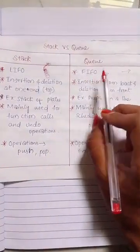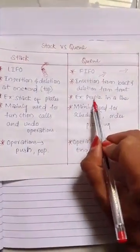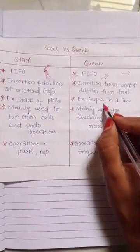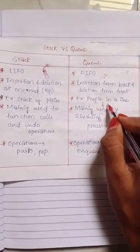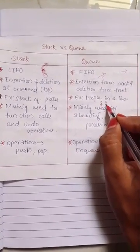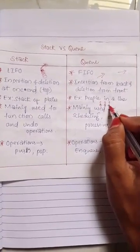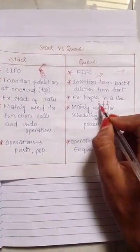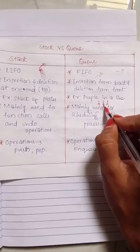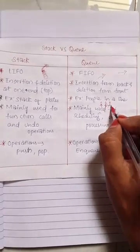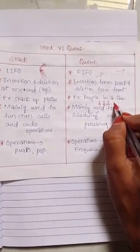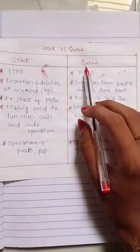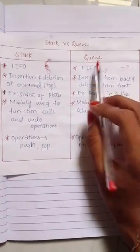And for queue, we have the example of people in a line. For example, if 10 people are there in a line, whoever entered that queue first, that person will exit first. That is an example for queue.